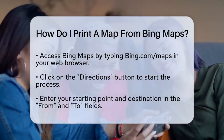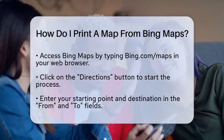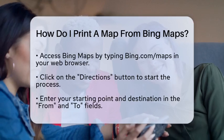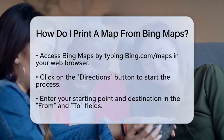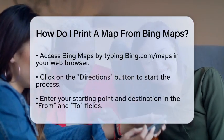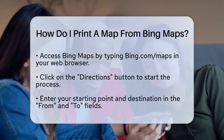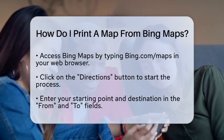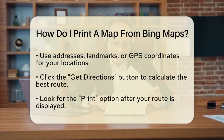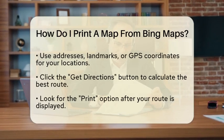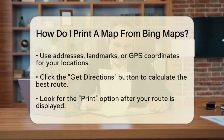Next, if you are looking to print directions, click on the Directions button. You will see two fields labeled From and To. Here, you can enter your starting point and destination. You can use addresses, landmarks, or even GPS coordinates to specify your locations. Once you have entered your details, click on the Get Directions button.